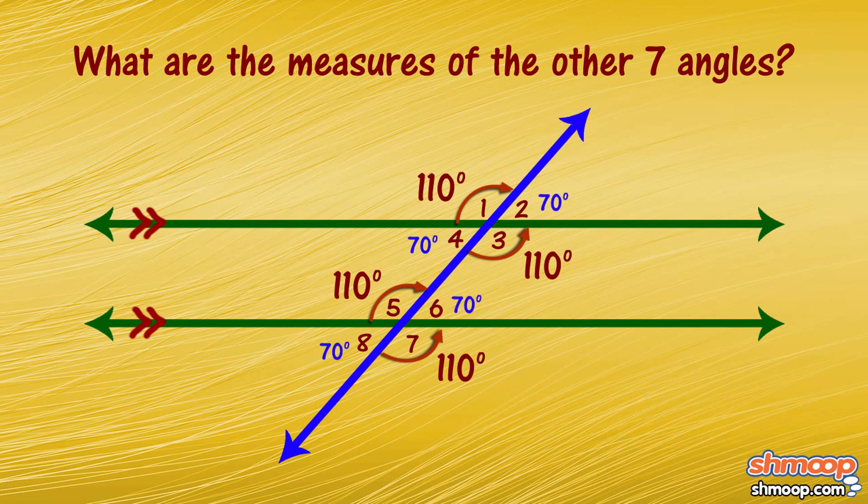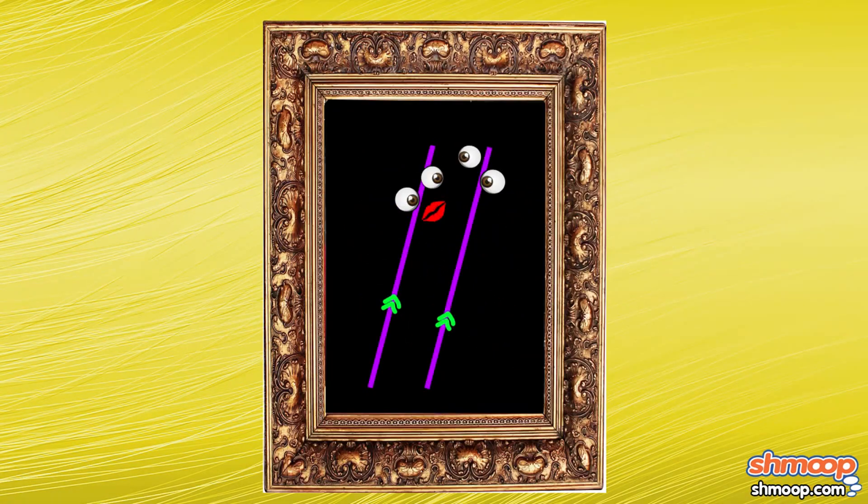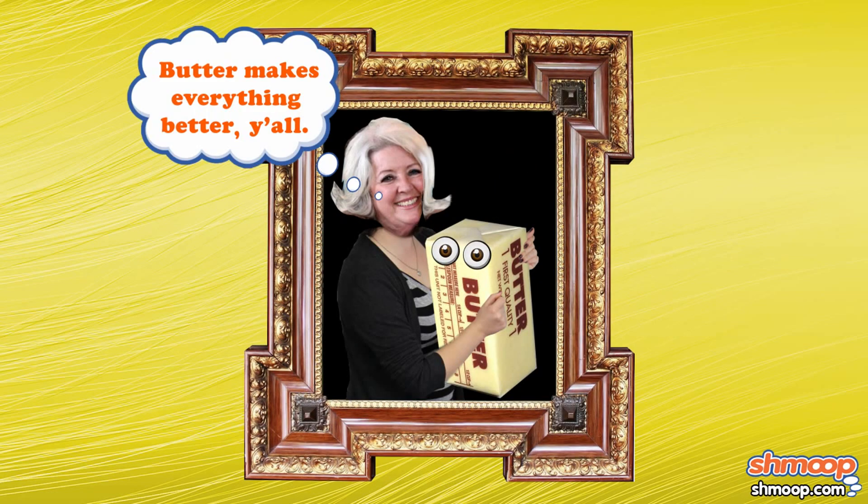And ta-da! You now have all your angles. So don't forget to include parallel lines when listing the world's great love stories. And as a bonus tip, don't ever try to get between Paula Deen and her butter.